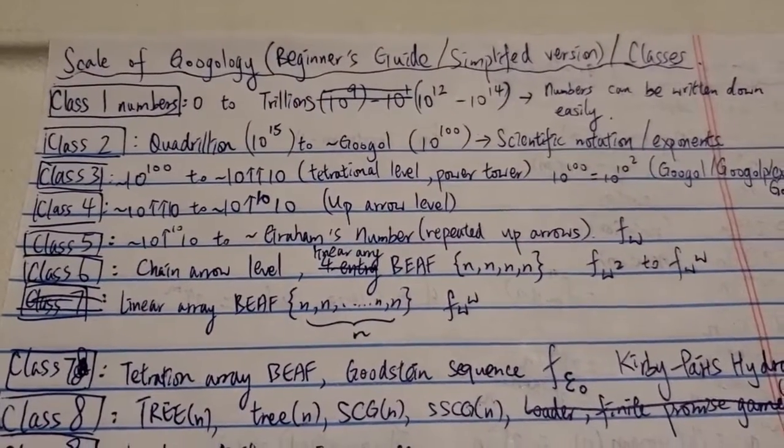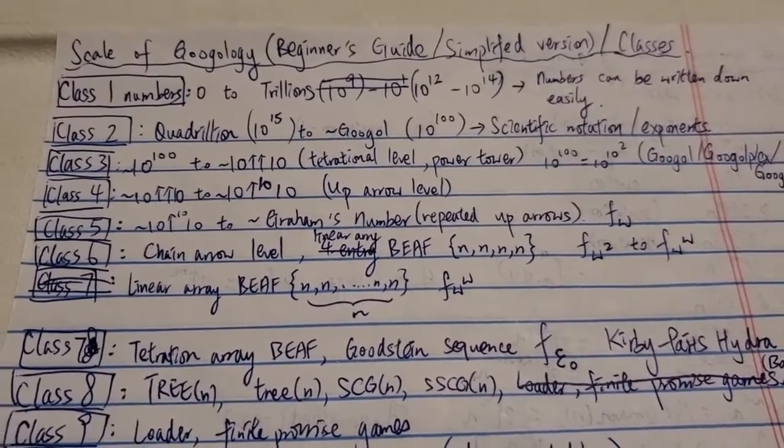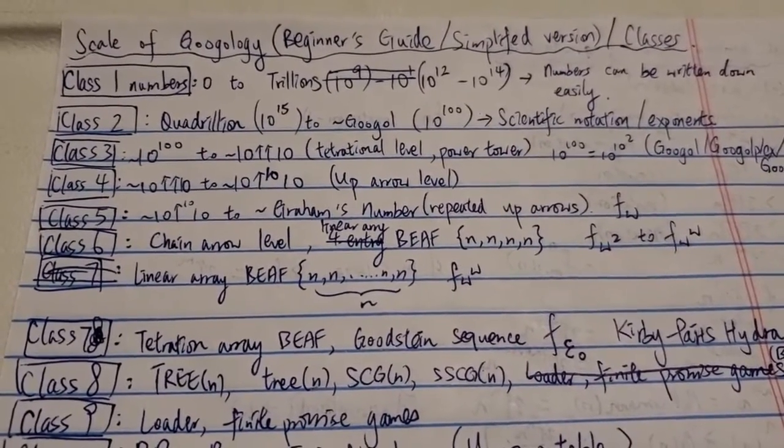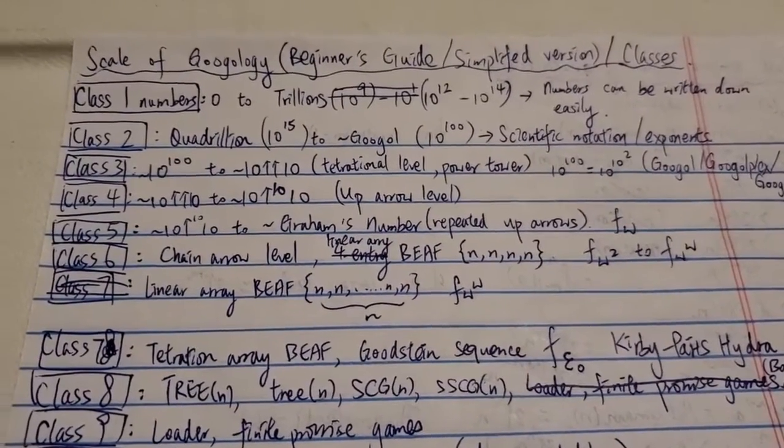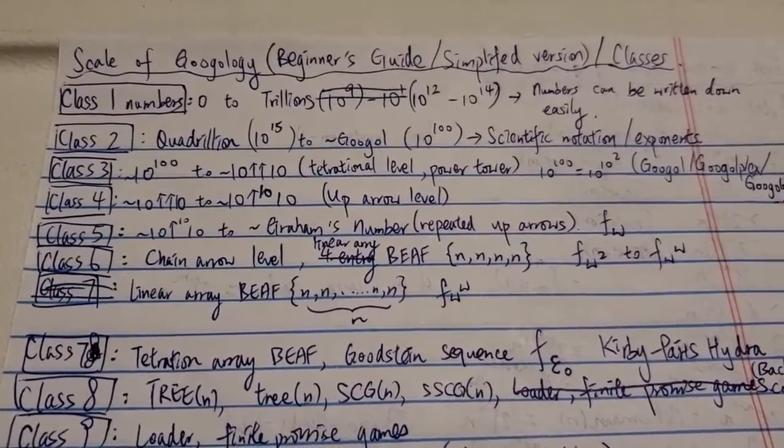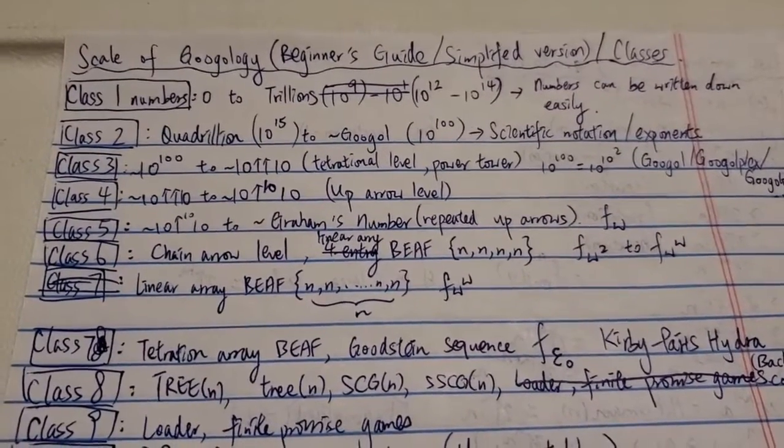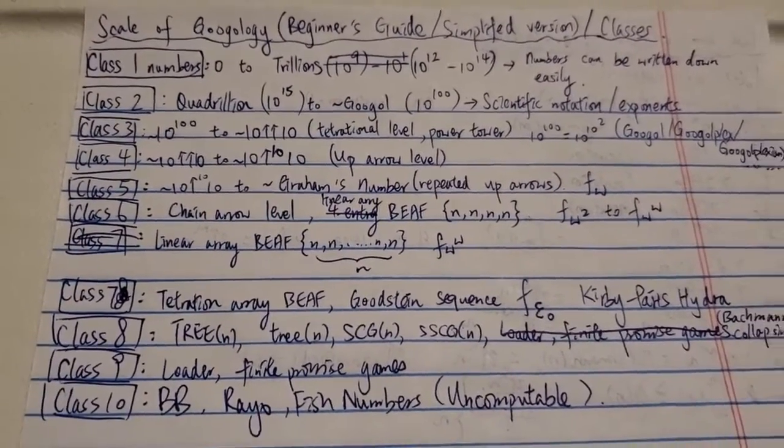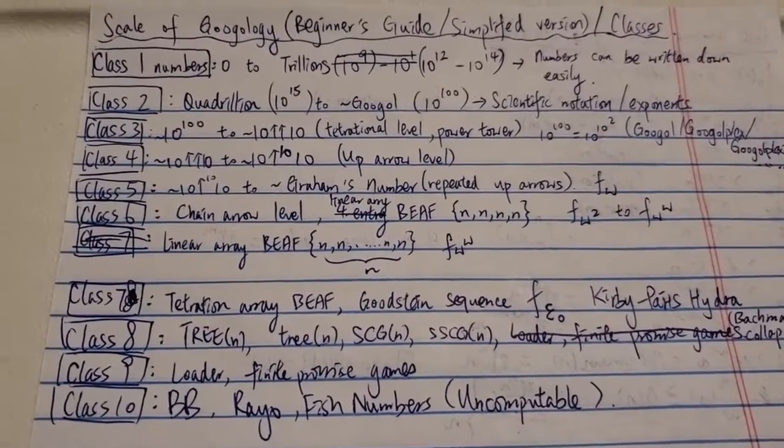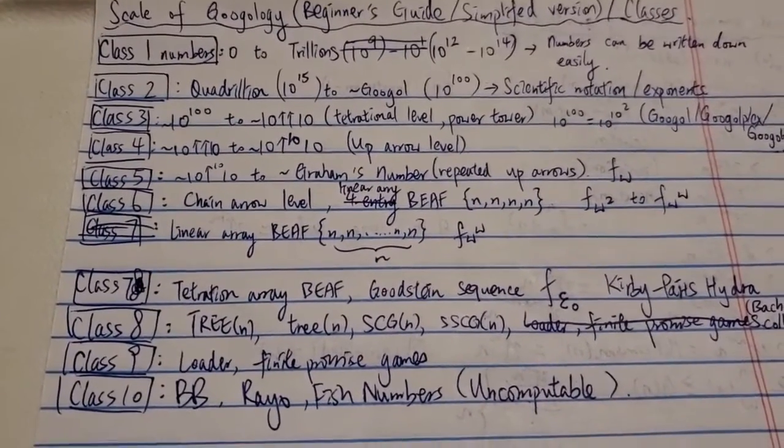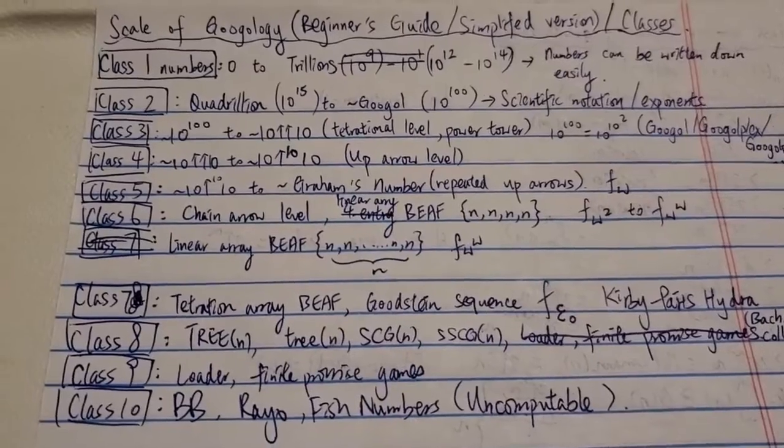I've made some videos before. I think one of them is called the PSI Levels. That one is a lot more in detail, a lot more complicated. On Googleology Wiki itself, there are like 20 different classes of numbers. In this video, I'm just going to simplify everything into 10 classes. But of course, this is just my own opinion. So let's get started.